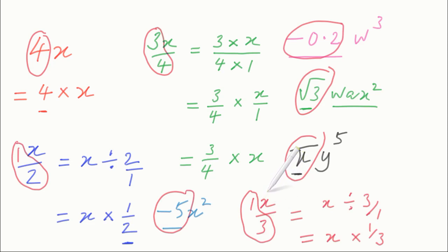So that's what the coefficient of a letter or combination of letters is in maths. Simply the number or numbers that it's being multiplied by. And that's about it for this lesson and I'll see you in the next one.